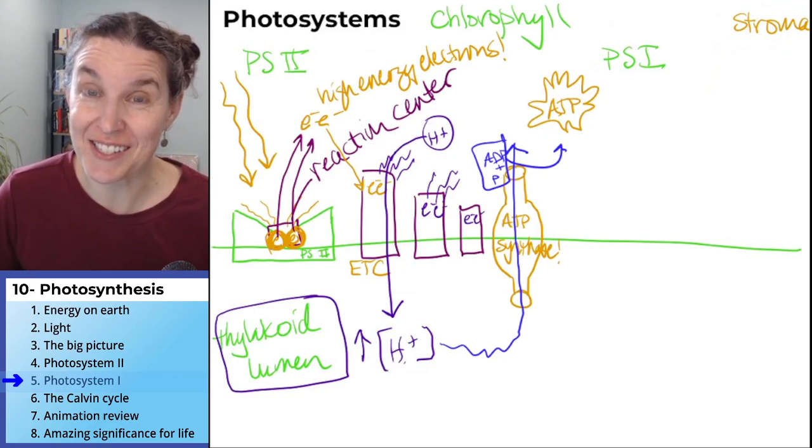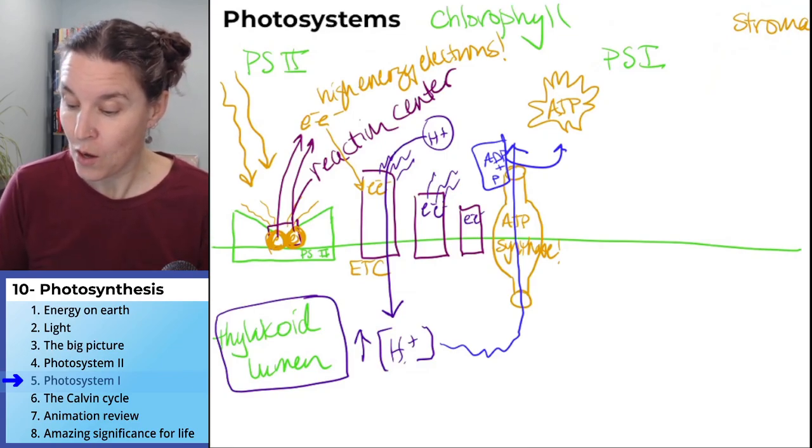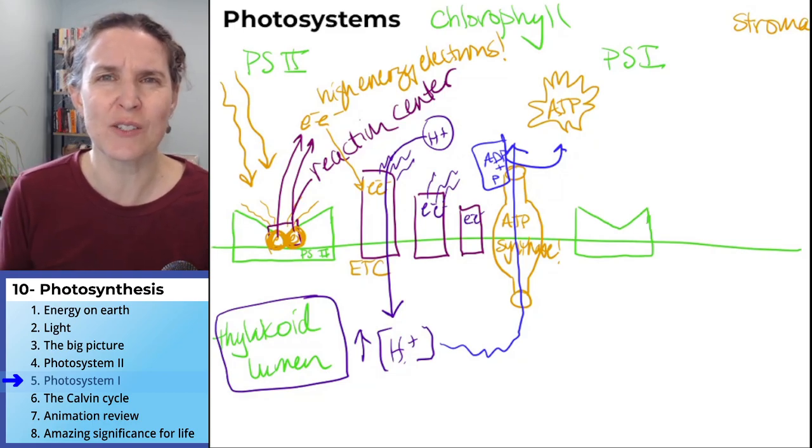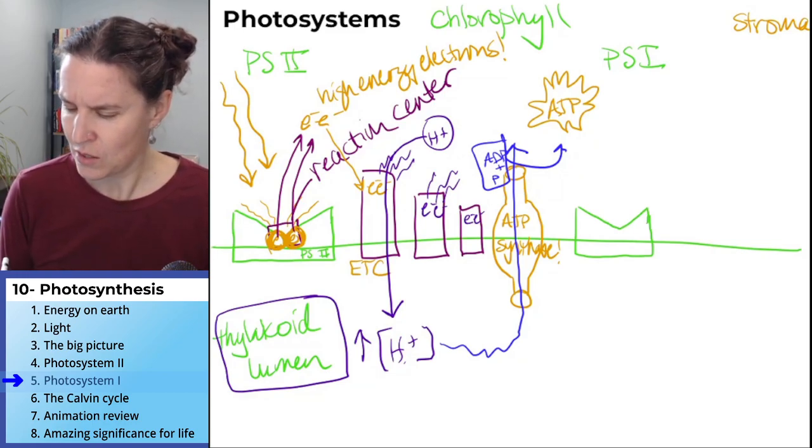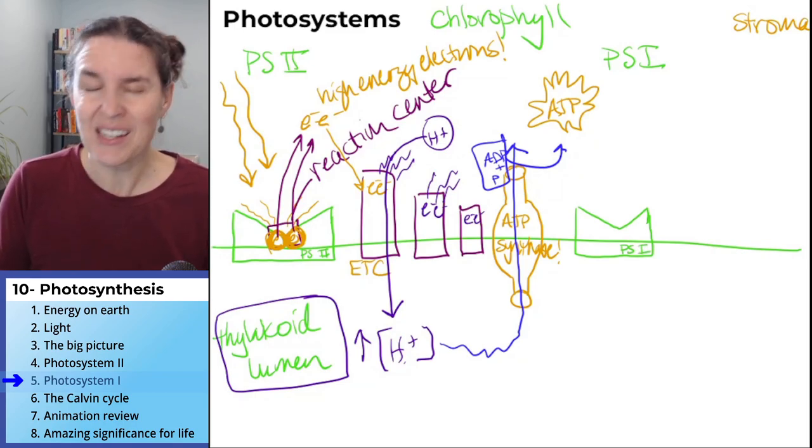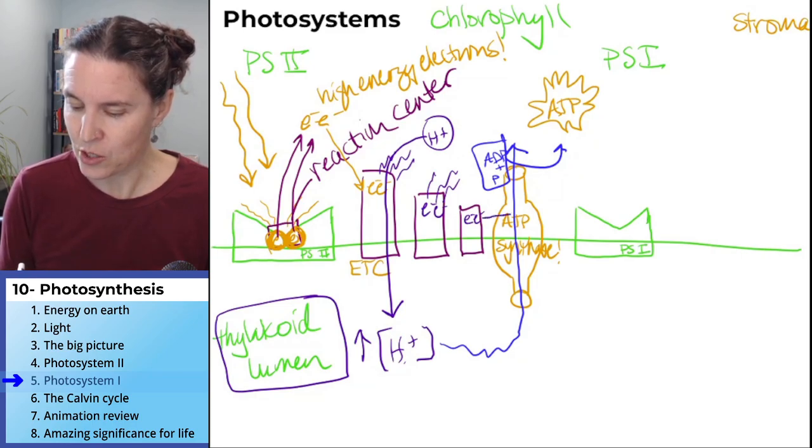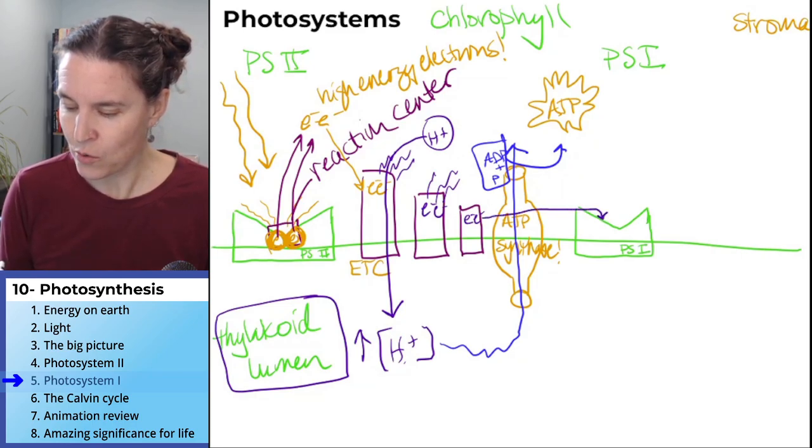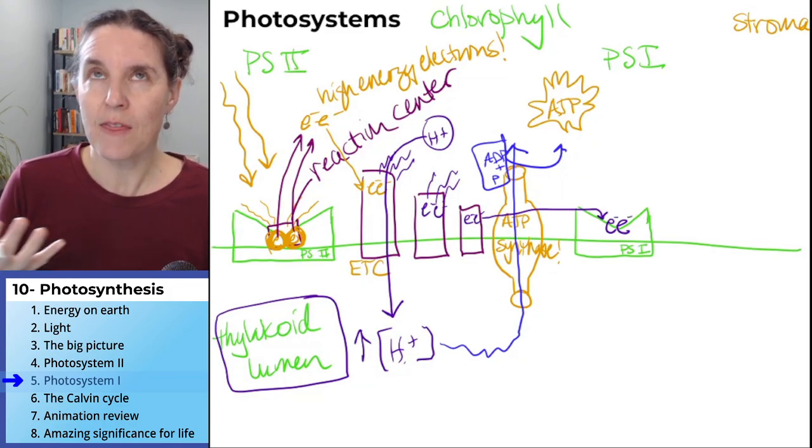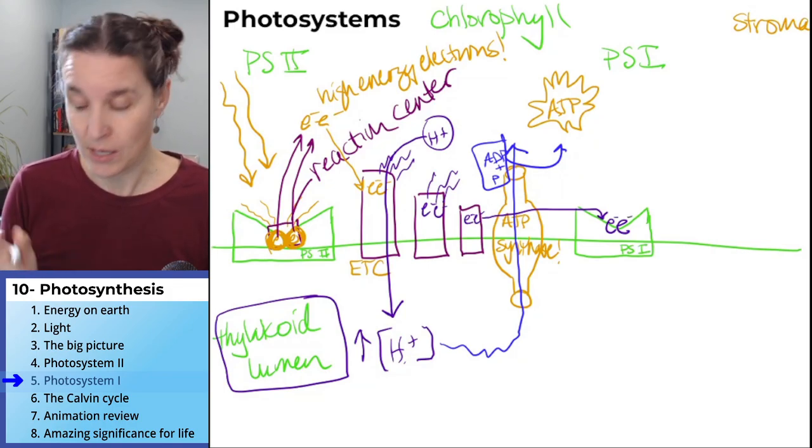Our transition to photosystem one only happens because we need a final electron acceptor for photosystem two for that electron transport chain. So this is photosystem one, and interestingly, these electrons are going to go - the final electron acceptor is going to be photosystem one.